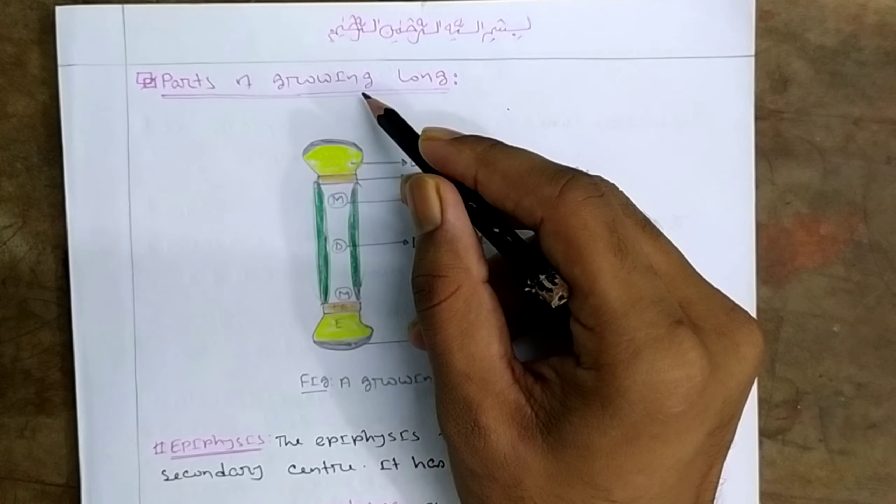The epiphysis of bone ossified from the secondary center. The secondary center gets ossified, while the primary center is also important for bone formation.